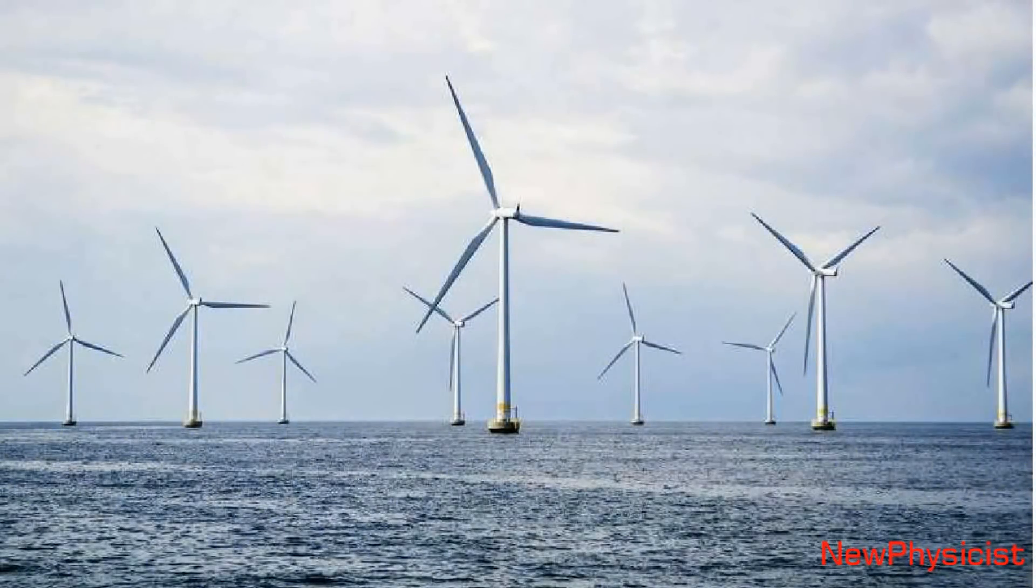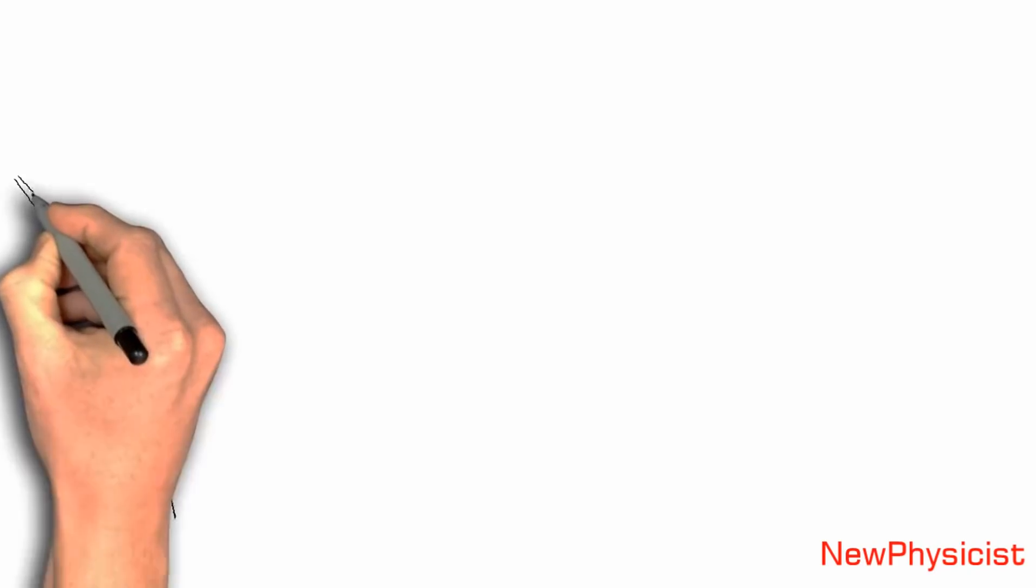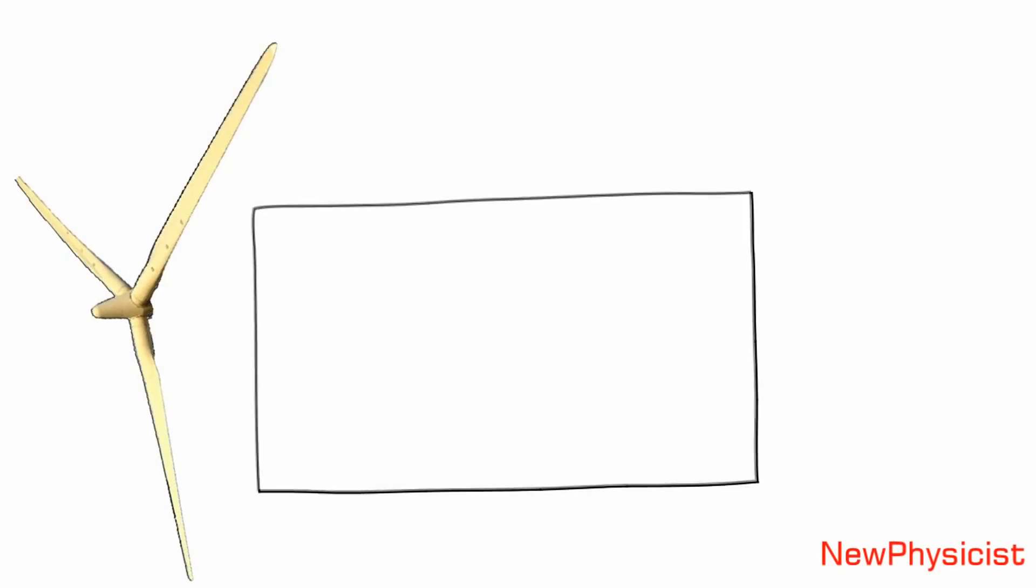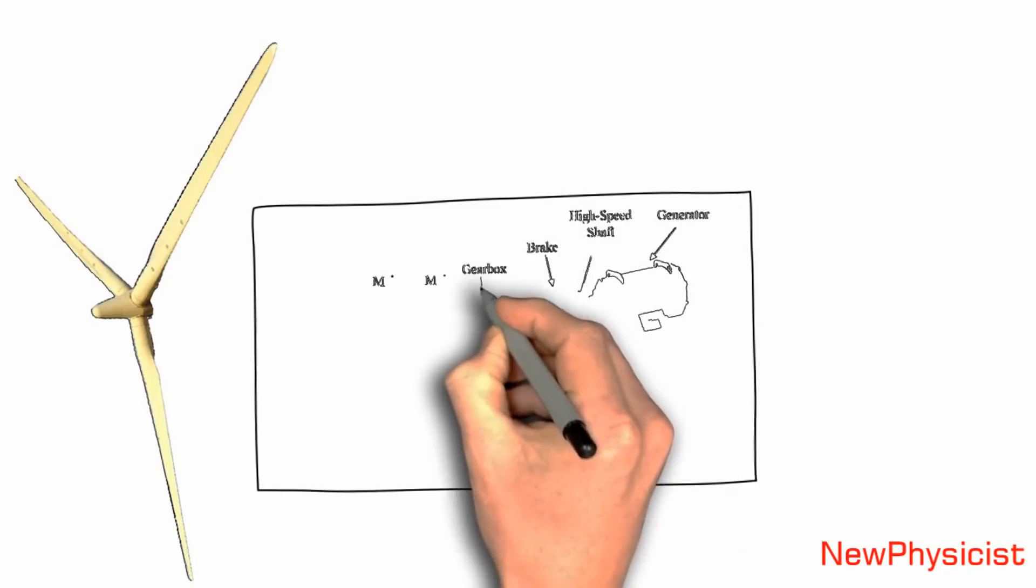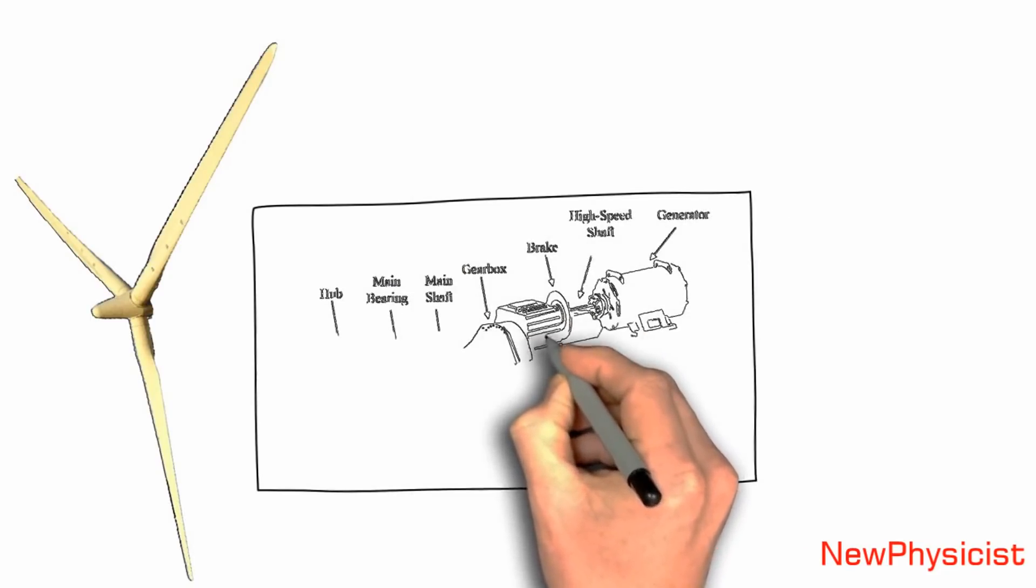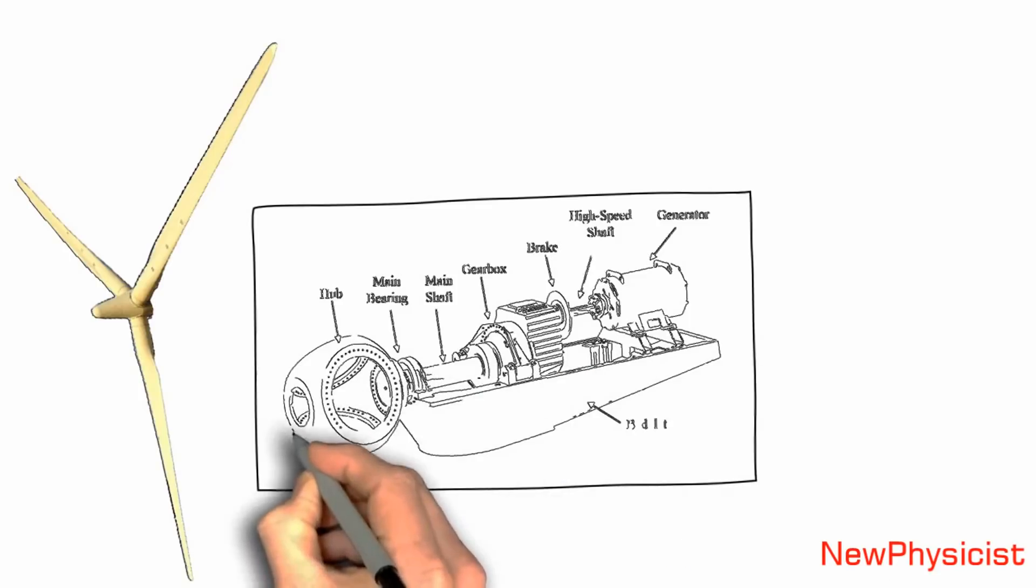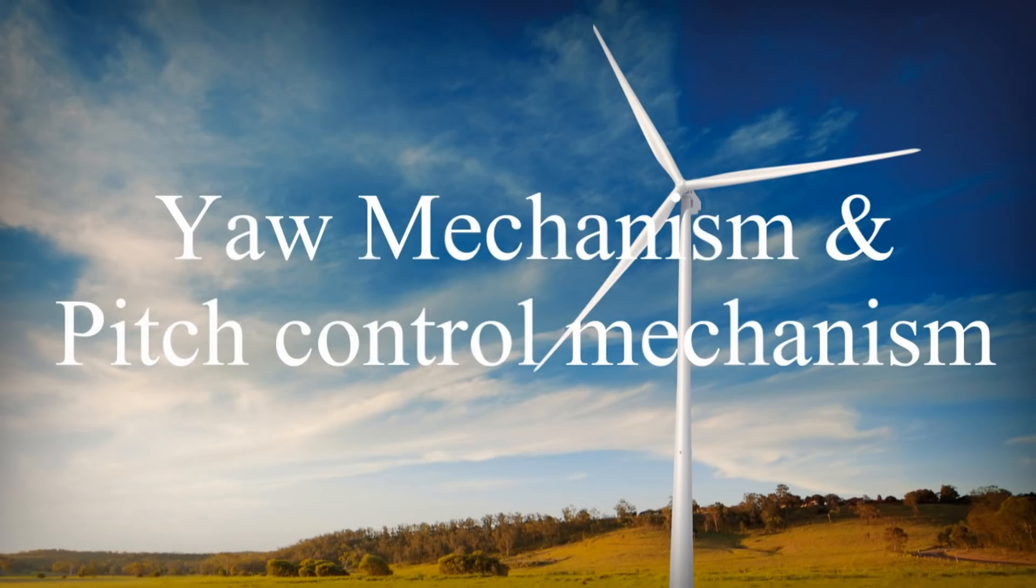Let's take a look at the most important components of a wind turbine. A horizontal axis wind turbine has four important components: propeller, gearbox, dynamo, and the tower. Besides, in a horizontal axis wind turbine, there are two controlling mechanisms called yaw mechanism and pitch control mechanism.